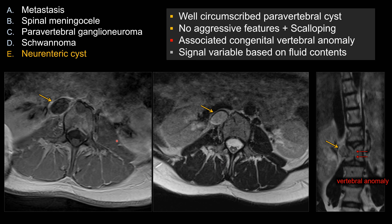Keep in mind that neuroenteric cysts can have variable signals internally — it all depends on the internal cystic content. For example, if you have a high proteinaceous content, it may look bright on T1. Sometimes it can look a little bit dark on T2.